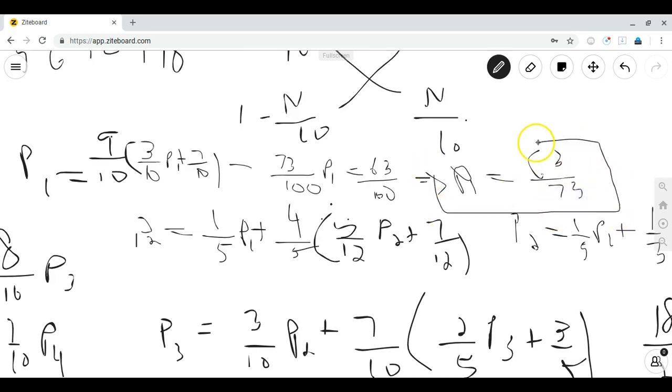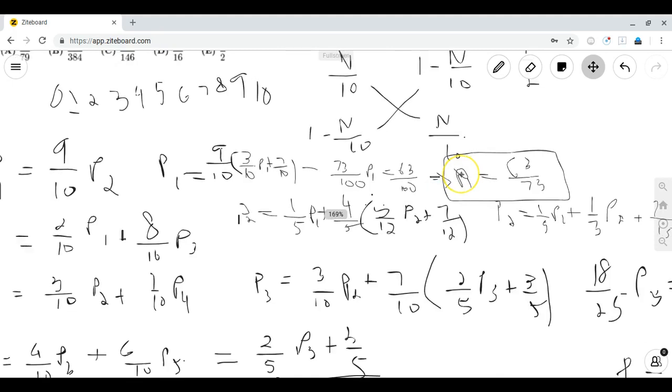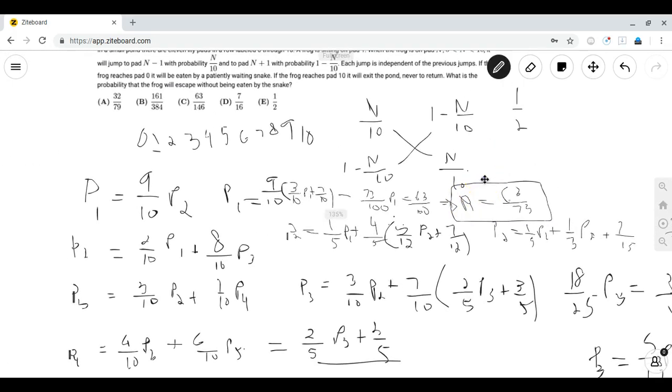However this is not enough to solve the problem because we defined earlier that p of n is the probability of going from lily pad n to 5. We also notice that p of 5 is simply equal to 1 half because of its symmetry, so we just have to multiply our final answer by 1 half. 63 over 73 times 1 half is equal to 63 divided by 146.